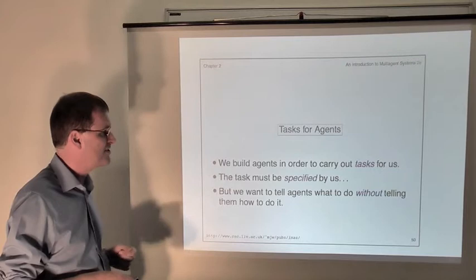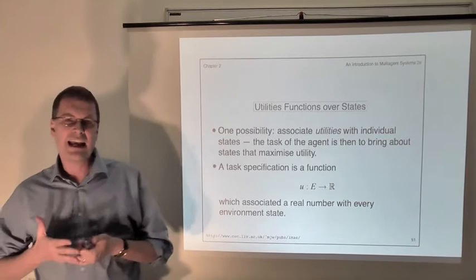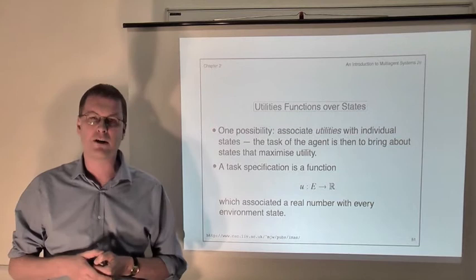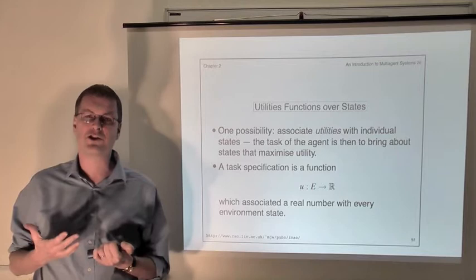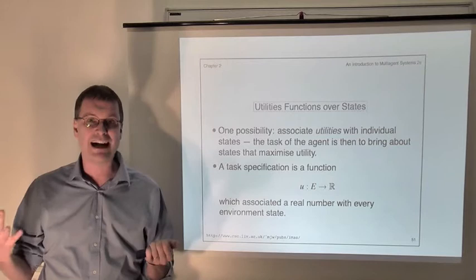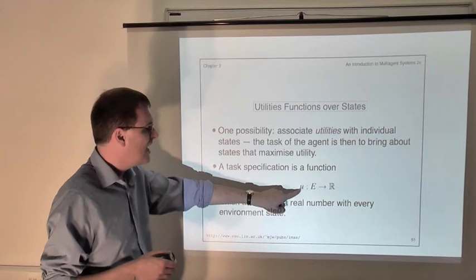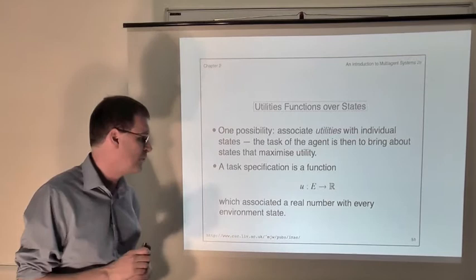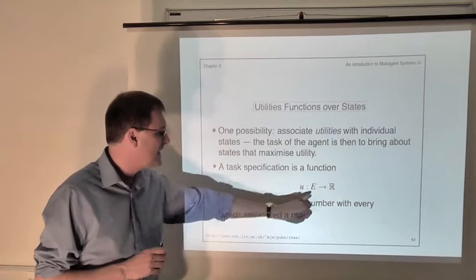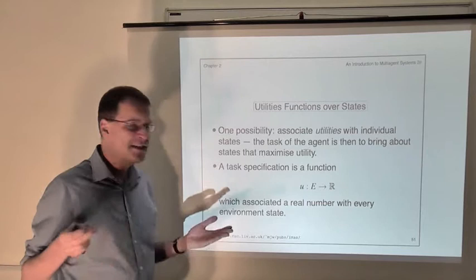So this is the area of what we'll call task specifications. The first idea is that we delegate a task to an agent by describing how good or bad specific environment states are, and the task of the agent is to bring about good, highly valued environment states. We do this formally through what are called utility functions — utility here just means value. A utility function gives us the value of something. The first kind takes as input an environment state and gives as output a real number, and the larger that number the better the environment state is.